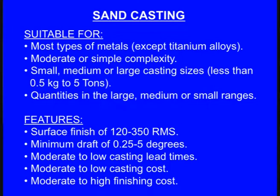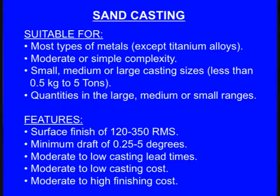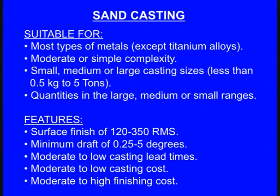Sand casting is suitable for most types of metals and alloys except titanium alloys. It has moderate to simple complexity — very complex castings are not possible. Small, medium, or large castings can be made, less than around 5 tons. Quantities in large, medium, or small ranges can be manufactured, giving flexibility in quantity and weight. Surface finish is 120 to 350 RMS, which is a poor surface roughness.